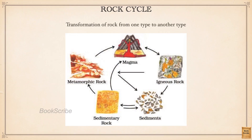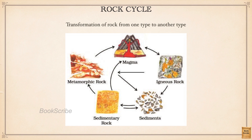Rocks formation and transformation happen in a cyclic manner. From magma, after cooling down, igneous rocks form. These igneous rocks break down, get transported, and are deposited to form sedimentary rocks. Sedimentary rocks can also break down and reform. Igneous rocks can directly transform into metamorphic rocks, and sedimentary rocks can also transform directly into metamorphic rocks. All three types — igneous, sedimentary, and metamorphic rocks — can be transformed back into magma with high temperature, and from that magma igneous rocks form again. This cycle is called the rock cycle.